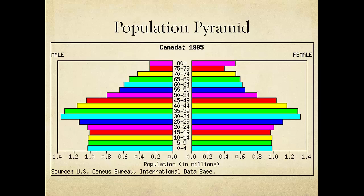Population pyramids show the number of people in a particular place at a particular time. Usually that place is a country. In this example, the country is Canada and the time is 1995.